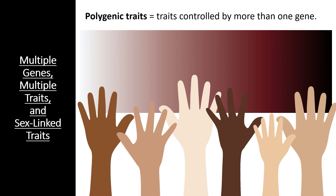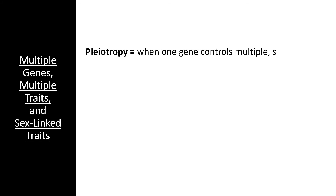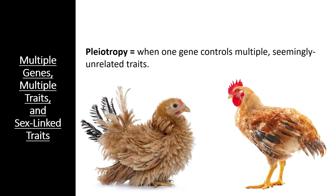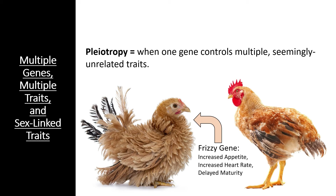Another non-Mendelian mode of inheritance deals with one gene controlling multiple seemingly unrelated traits, a condition known as pleiotropy. Consider a gene in chickens that causes the feathers to be much more frizzy than normal. Oddly enough, this gene also increases the chicken's appetite, increases the heart rate, and even delays sexual maturity. All of these effects are linked to the same protein coded for by the frizzy gene.